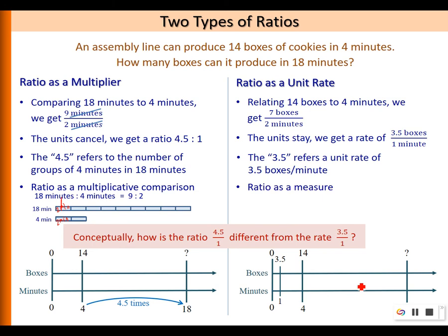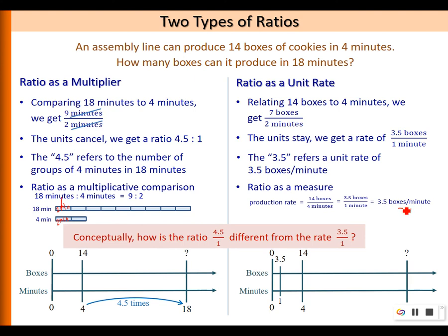Ratio as a measure is not a multiplicative comparison because boxes and minutes are of two different attributes — we cannot compare them multiplicatively. Instead, we can relate them to give us a new measure, which is a rate of production. 14 boxes in 4 minutes is the same as 3.5 boxes in 1 minute. As a rate, it's 3.5 boxes per minute. This unit is neither measuring the boxes nor the time — it tells you how fast the assembly line can produce boxes of cookies.